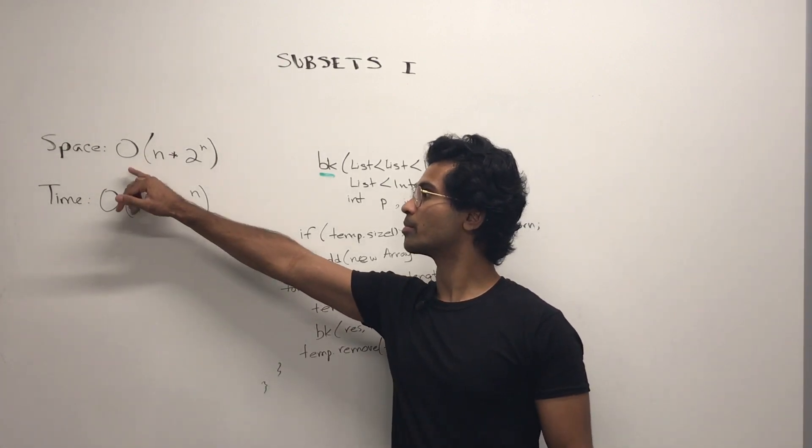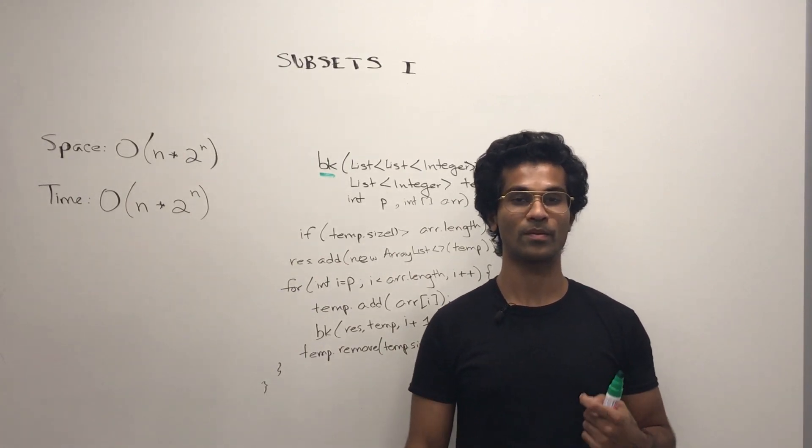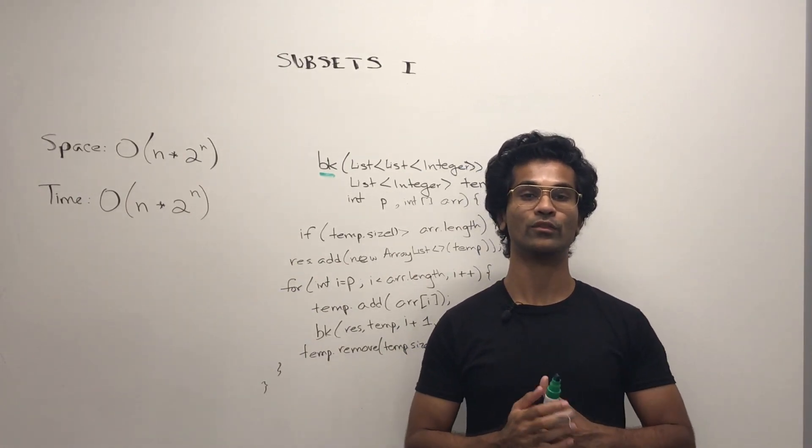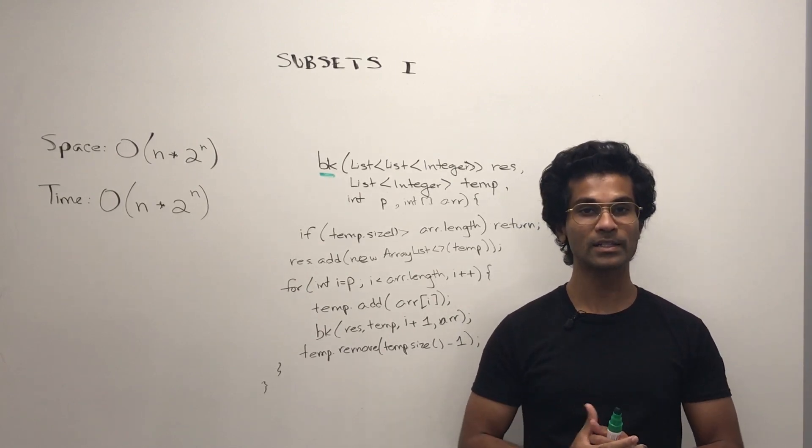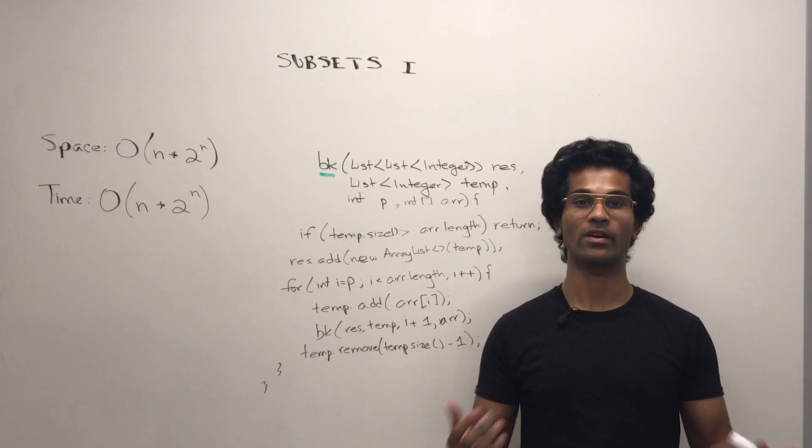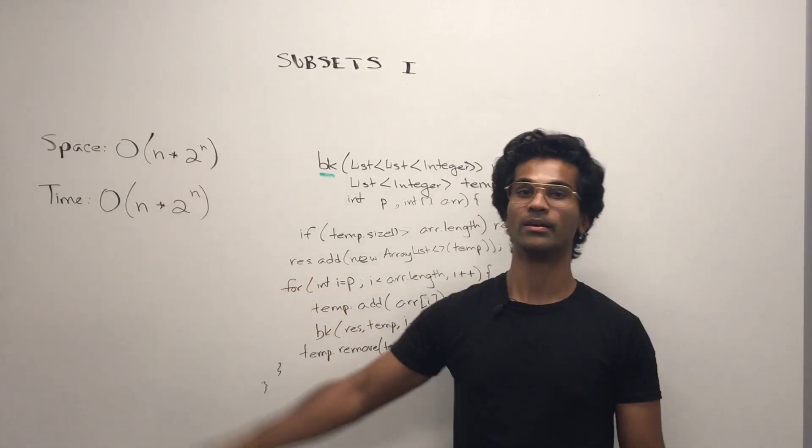So why is our space complexity n times 2 power n? That's because if you remember from the output, we have a total of 2 power n number of items, but the length of those could be varying.